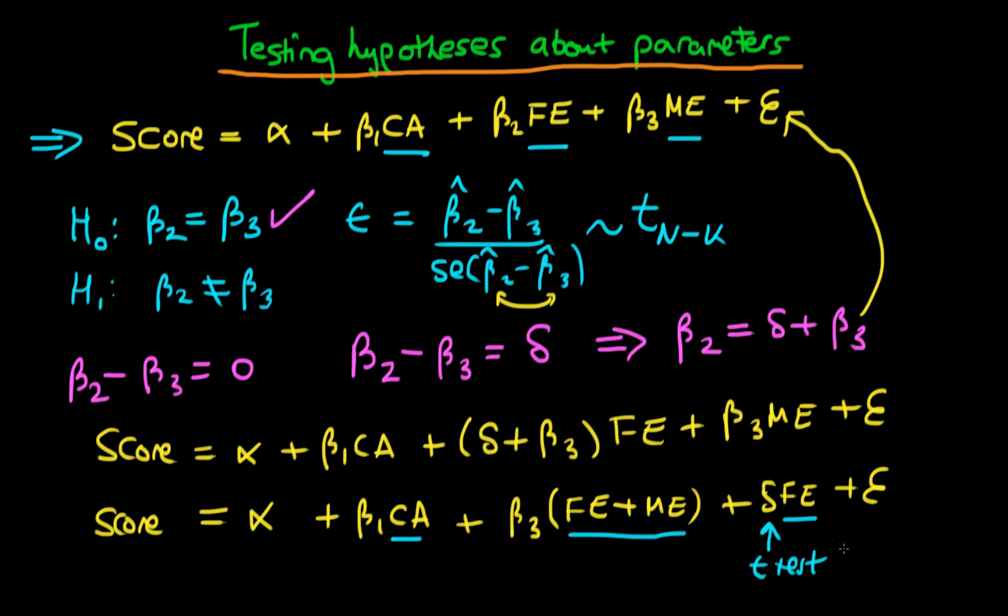So what we would do is just a standard t-test on our estimate of delta, which is delta hat. Because remember, if the null hypothesis is true, we know that delta should be equal to zero. So there shouldn't be any effect of father's education once we have already included it to have exactly the same effect as mother's education, which is what we're doing here.